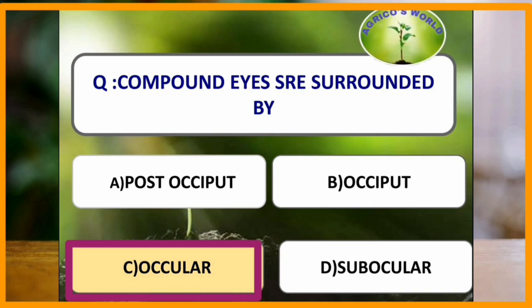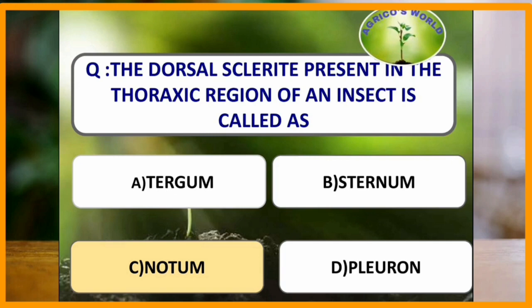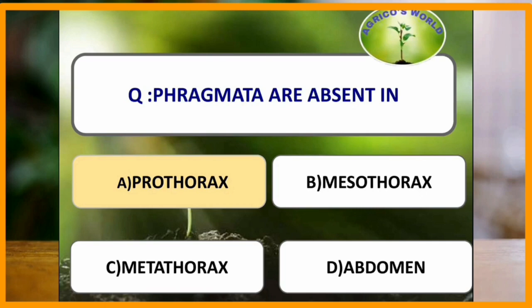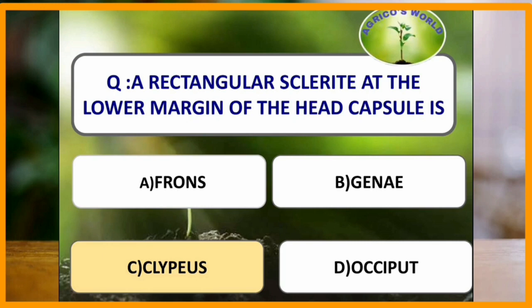The dorsal sclerite present in the thoracic region of an insect is called notum. Phragmata are absent in which of the following parts? Phragmata are absent in the prothorax. A rectangular sclerite at the lower margin of the head capsule is called clypeus.